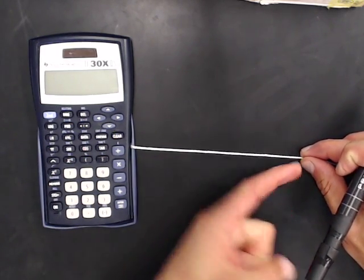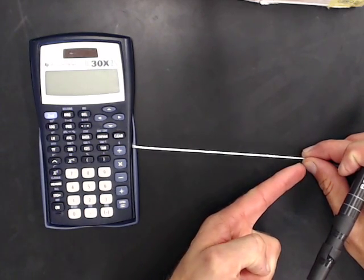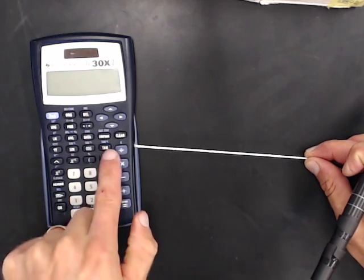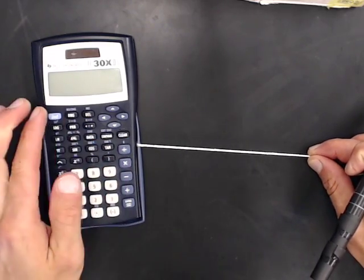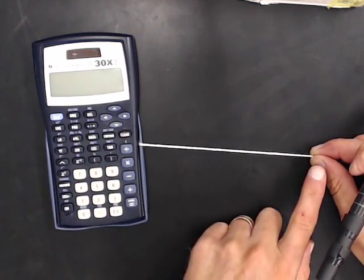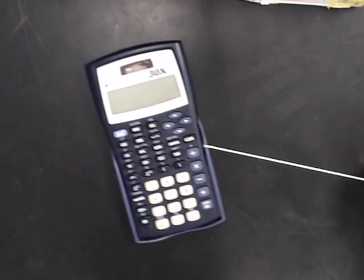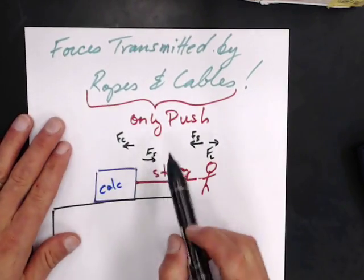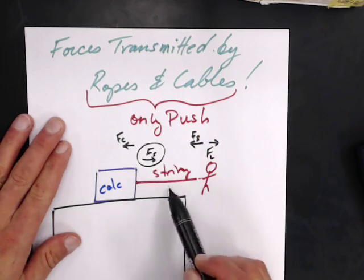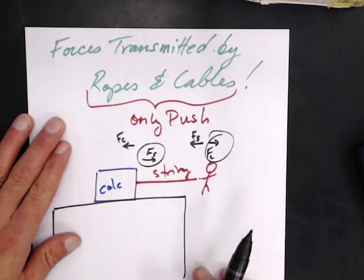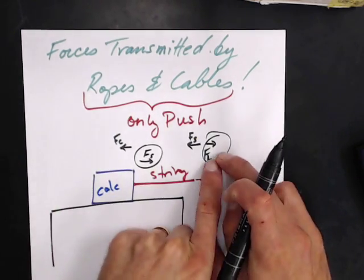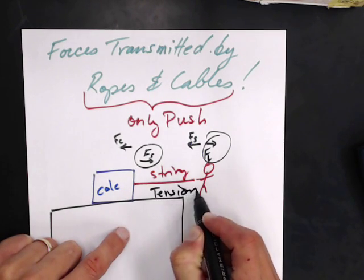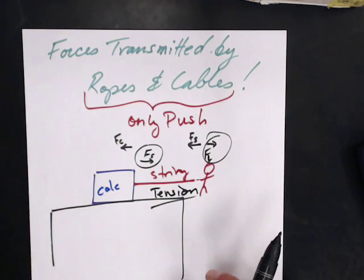If I pull on the string this way, the string is pulling my hand backwards this way. But the string is pulling this way on the calculator, and the calculator is pulling back, so the string gets stretched out, but my force gets transmitted to the calculator as it gets pulled out of the way. So the force of the string is equal to the force of LUBS, and I can transmit that down — that becomes what we call tension.